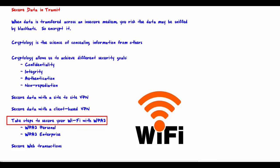Earlier versions of Wi-Fi security — WPA and WEP — are now pretty much obsolete and insecure and should not be used. WPA2 comes in two flavors: personal, which uses a pre-shared key where all users share the same key; and enterprise, which uses a RADIUS server where each user has a unique key. Personal is easier to set up; enterprise is more difficult but more secure, particularly for enterprise environments.